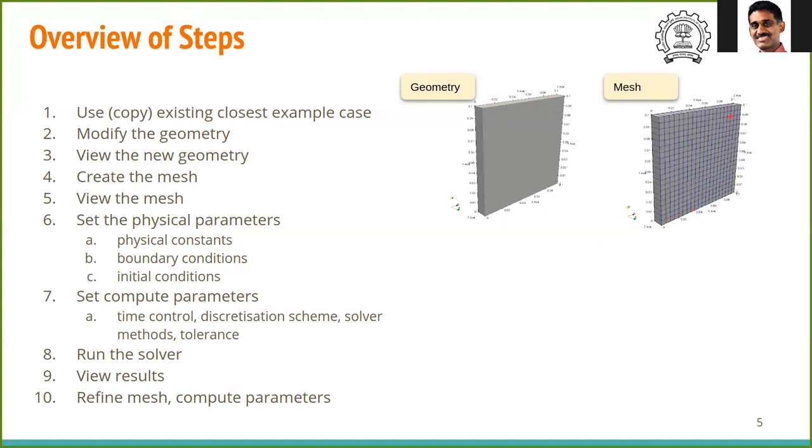After confirming the mesh, we have to set the physical constants such as viscosity and thermal conductivity. Then we specify the initial and boundary conditions. Finally, we specify the computation parameters. These are parameters related to time control, discretization scheme, solver method, tolerance, and when to write the solution to the disk, etc.